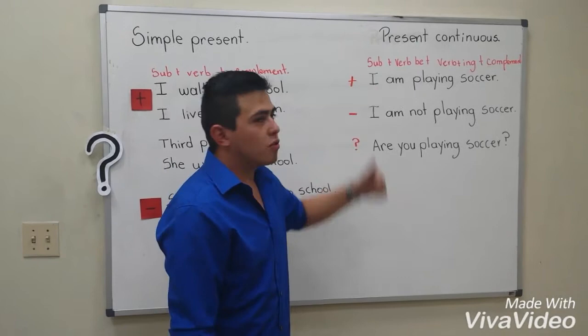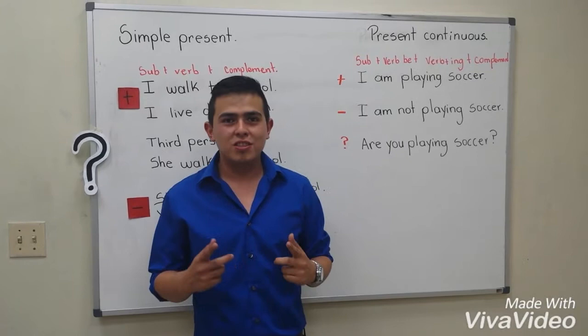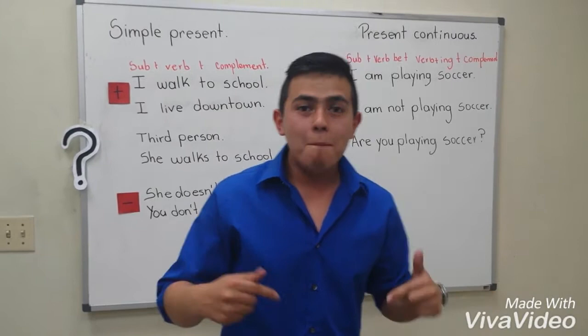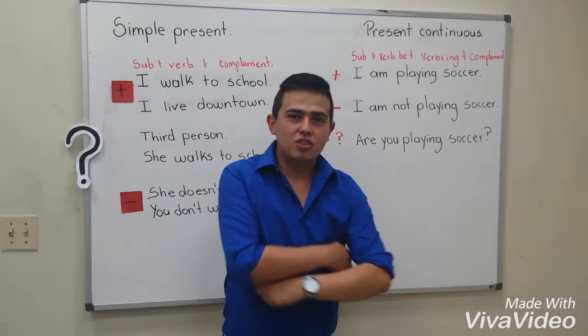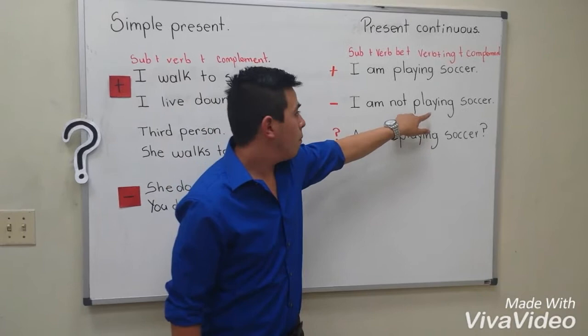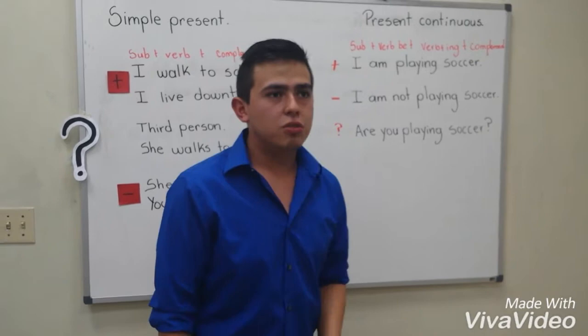Now we are going to explain the present continuous. We use the present continuous for things that are happening now. For example, I'm playing soccer. For a negative sentence: I'm not playing soccer. We use subject, verb be, not, verb plus -ing, and complement.